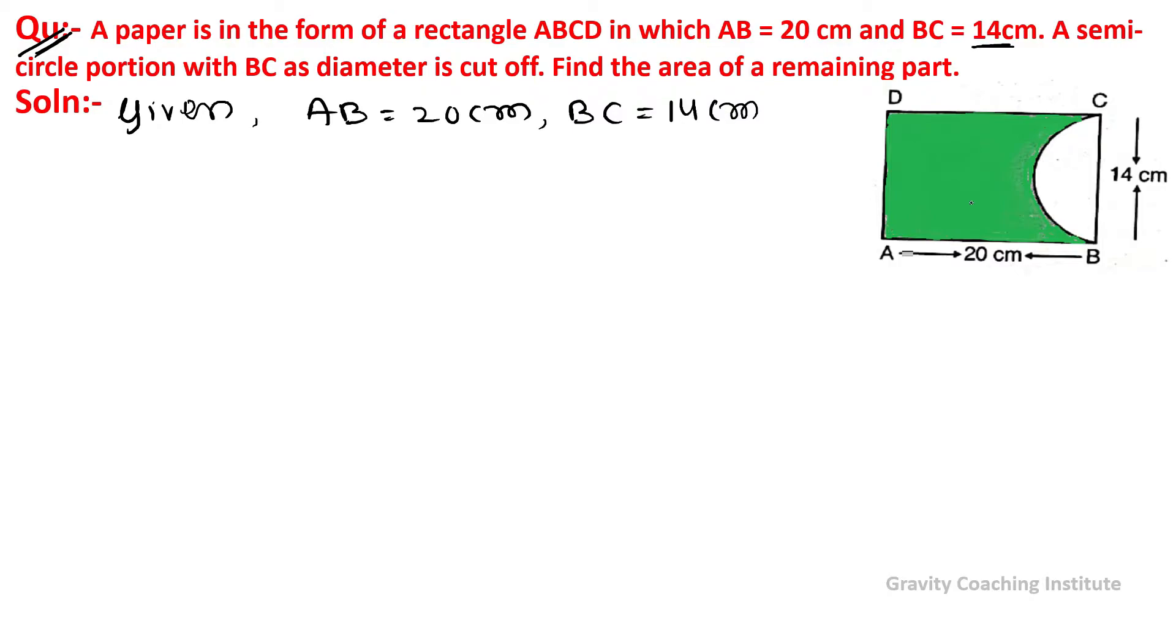The remaining part area is simple - we take the rectangle area and subtract the semicircle area to get the remaining part area.